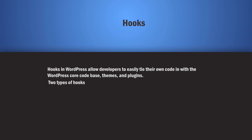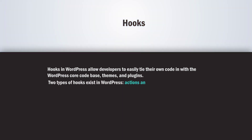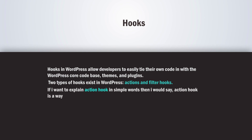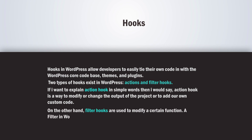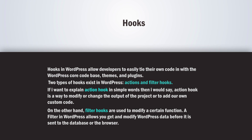By default there are two types of hooks in WordPress: action and filter. An action hook is a way to modify or change the output of the project or to add your own custom code. Actions are functions performed when certain events occur in WordPress. On the other hand, filter hooks are used to modify a certain function — a filter in WordPress allows you to get and modify WordPress data before it is sent to the database or the browser.